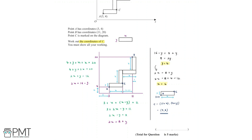The coordinates of point C are (9, 8). This question is worth 5 marks: the first mark for the expression 2x equals 16 take away y, the second for 2x equals 8 plus y, the third for finding y equals 4 and x equals 6, the fourth for the x-coordinate of C being 9, and the fifth for the y-coordinate being 8 — achieving the full five marks.